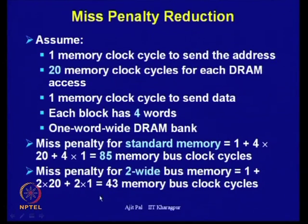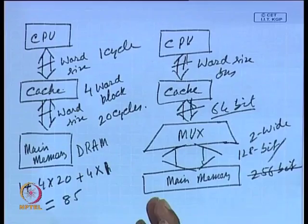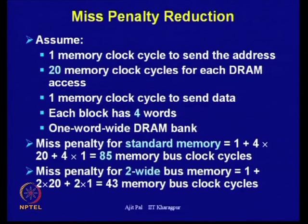This is the miss penalty reduction using a 2-wide bus. If made 4-wide, it becomes 1×20 + 1 = 22 cycles, so further improvement is possible. However, a wider bus is costly to implement, so the main memory bus width is typically kept at 2-wide or at most 4-wide.